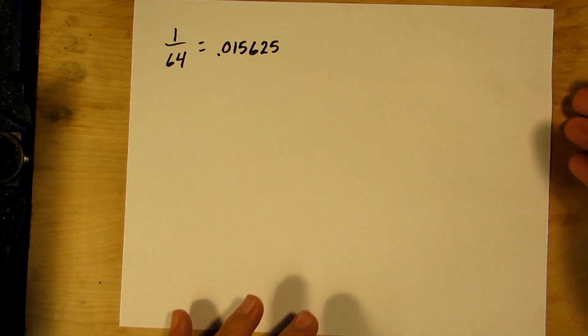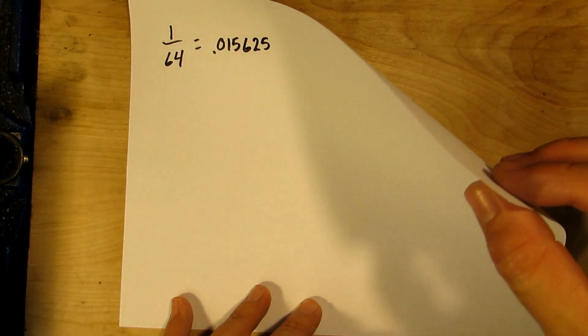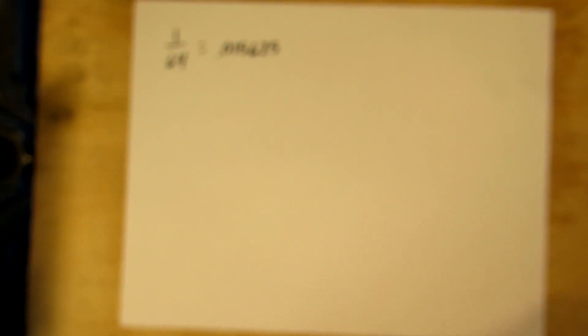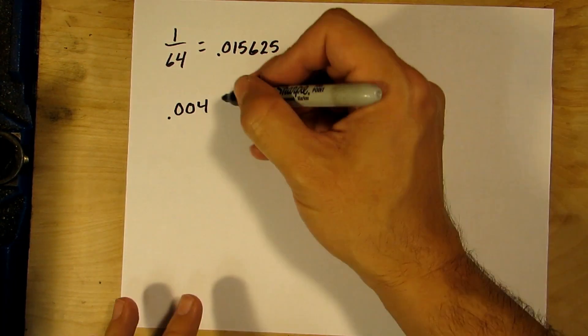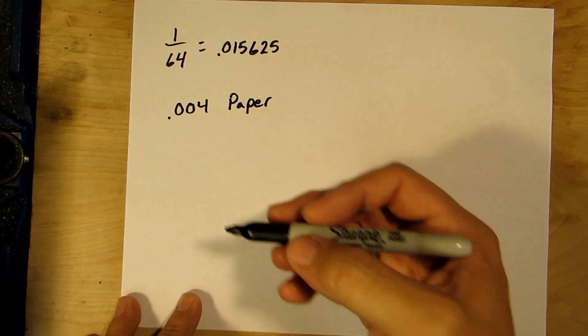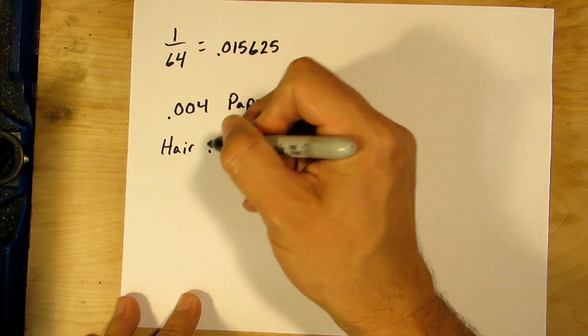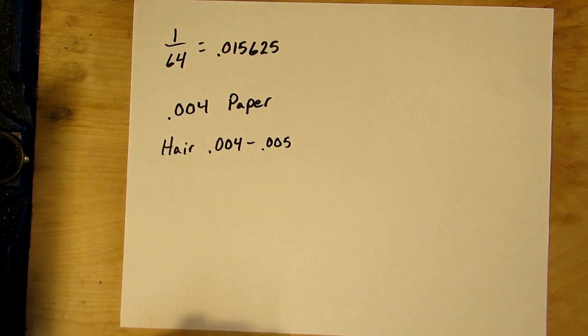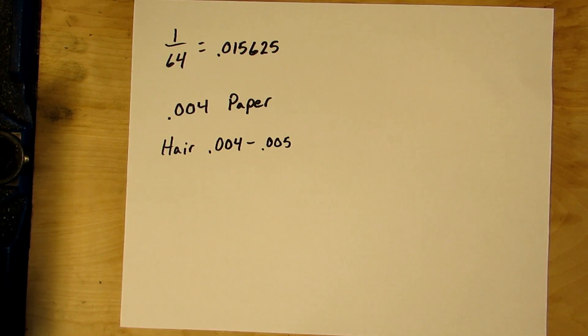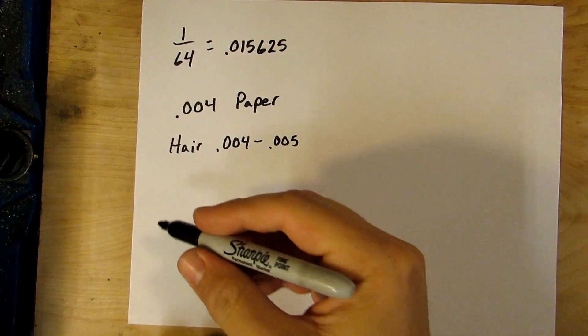Now to give you even further perspective, the paper that this is written on, which is just standard copy paper or printer paper, that is four thousandths of an inch thick, 0.004. Most human hair is also around four to five thousandths of an inch thick, unless you've got all the luscious body and volume that I do.